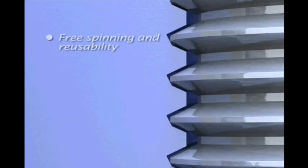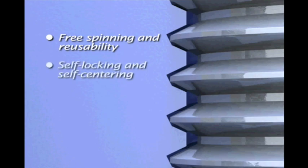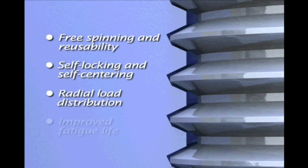Spiralock's wedge ramp allows male fasteners to spin freely relative to the female threads until clamp load is applied. At that point, the crest of the standard male threads is drawn tightly against the wedge ramp, creating a continuous spiral line of contact along the entire length of the thread engagement.